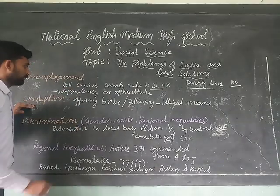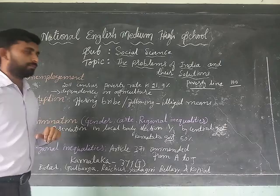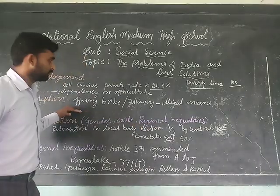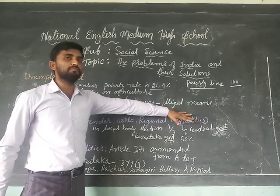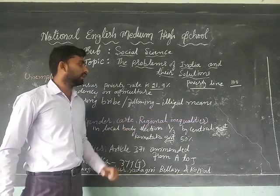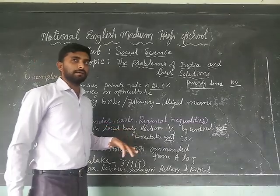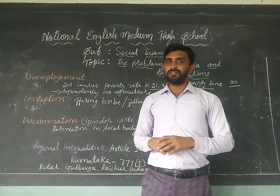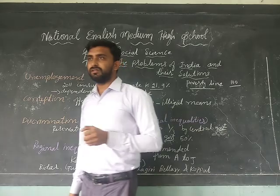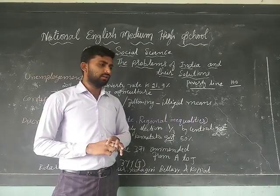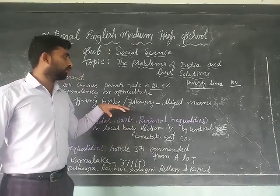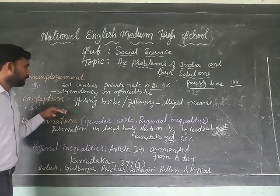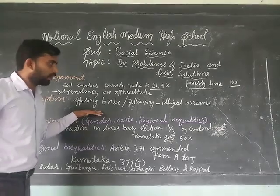The next problem is corruption. Corruption means offering bribes and following illegal means and methods. Nowadays, people are not even taking corruption as corruption — they think it is part of their status. For example, during elections, people know it is illegal but they still do it. This is an illegal offence, but it is still prevalent in India.